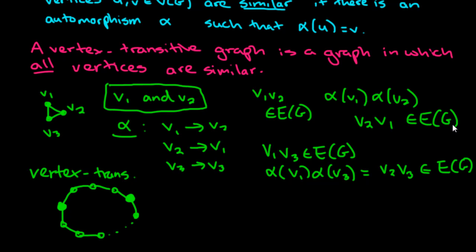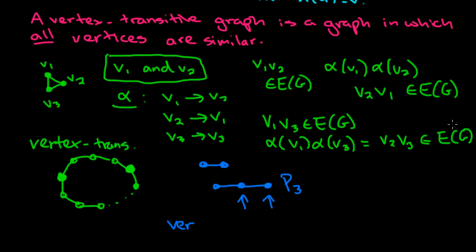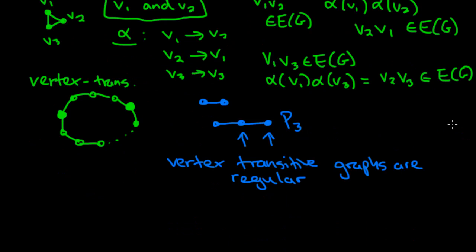Now let's think about something that's non-vertex transitive, something like a path. A path on at least three vertices, because if I had just two, these two vertices are similar. But if I take a look at this path P3, this is not vertex transitive, because there is no way to show that this vertex and this vertex are similar. In particular, this one has degree two and this one has degree one, and so there will not be an automorphism that maps the two to each other. One particularly important thing to remember about vertex transitive graphs is that they must be regular. If a graph is vertex transitive, then it is regular.